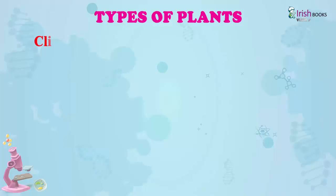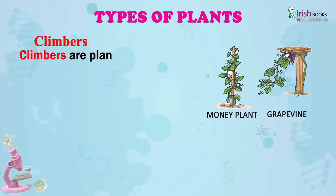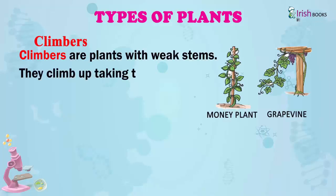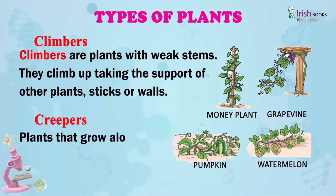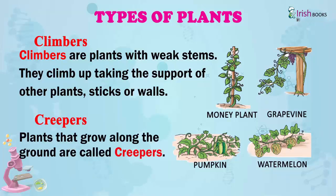Climbers. Climbers are plants with weak stems. They climb up taking the support of other plants, sticks or walls. Creepers. Plants that grow along the ground are called creepers.